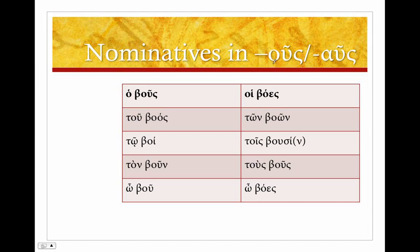Moving on, I'm going to group together the stems that end in -ous or -aus, these two diphthongs. We'll start with ho boos, meaning 'cow' or 'ox.' Ho boos, to boos, to boi — and it's important to notice that these are actually two syllables, bo-i — ton boon. Right there we see a distinction: we've got our stem and the accusative in -n, like polis. So we see the -oos stem in the nominative and accusative singular, but otherwise we see omicron. And then in the vocative: bou — we get the stem.